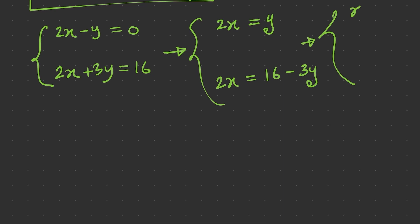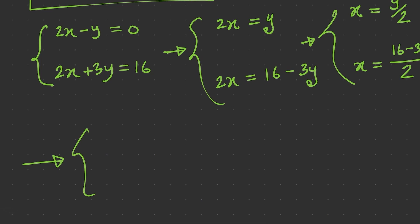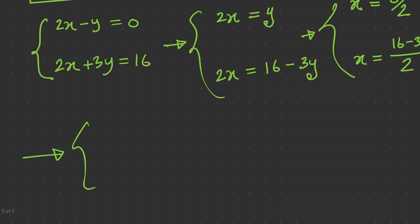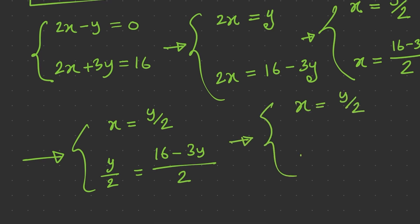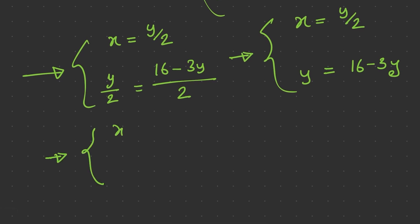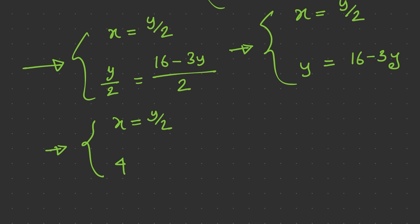So x equals y divided by 2, and from the second equation x equals (16 minus 3y) divided by 2. Since both expressions equal x, we can equate them. Cancelling the 2 from both sides gives y equals 16 minus 3y, and bringing minus 3y to the left side gives 4y equals 16.